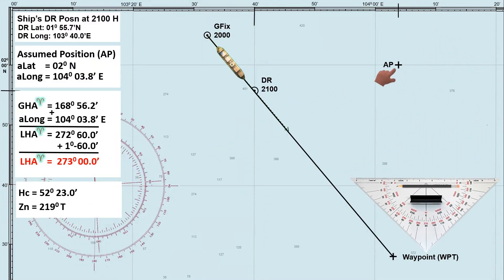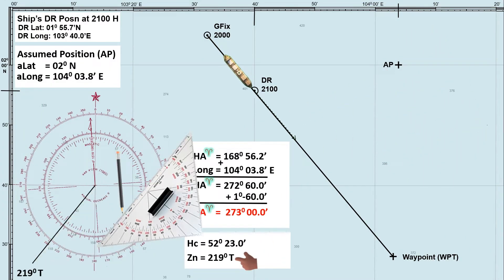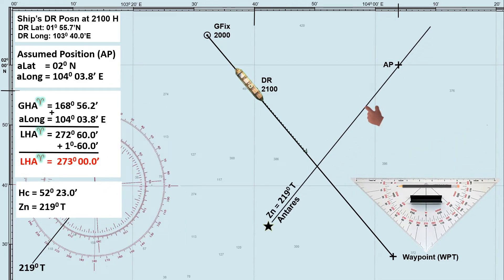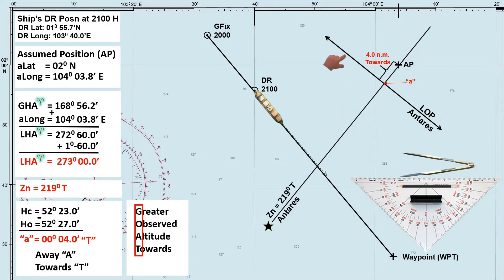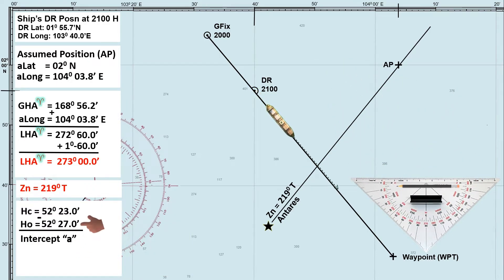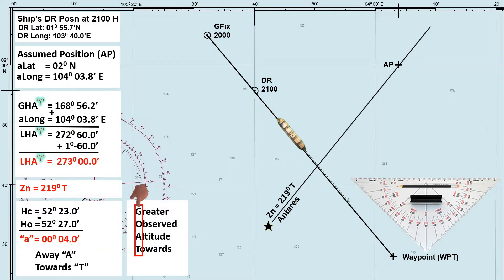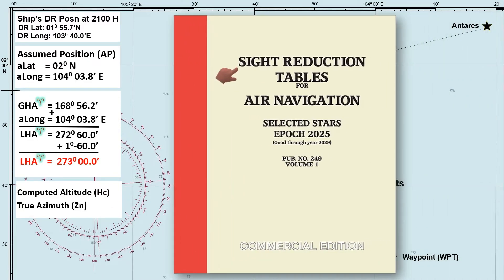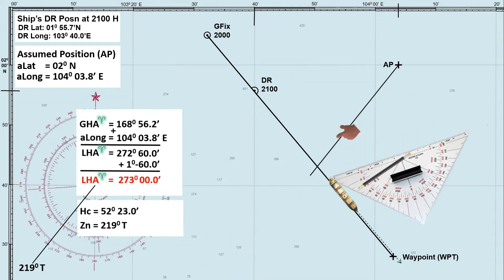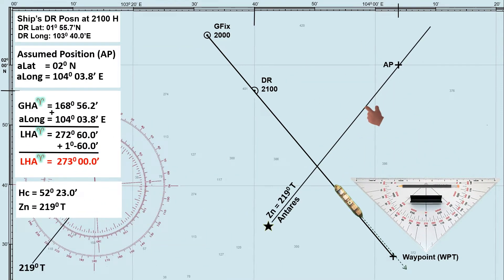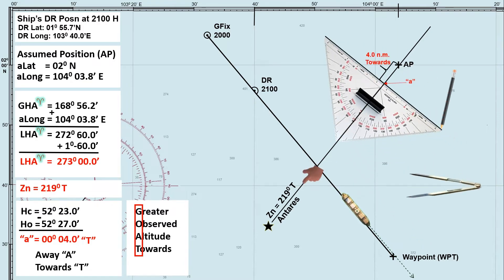Assumed position, or AP, is a chosen or hypothetical position used primarily in celestial navigation when calculating a ship's position based on observations of celestial bodies. It is typically not an actual or fixed location but a theoretical one, chosen for ease of computation, often determined using the Marc-Saint-Hilaire method with the help of sight reduction tables, commonly known as Table 249. The first part of this video explains how to determine the assumed position, while the later part will guide you on how to use AP to find the ship's line of position through celestial observation.